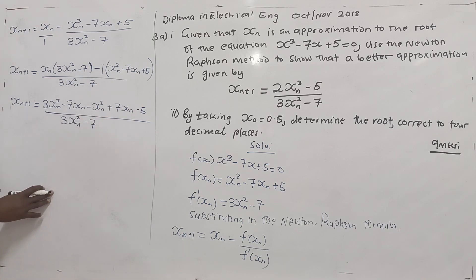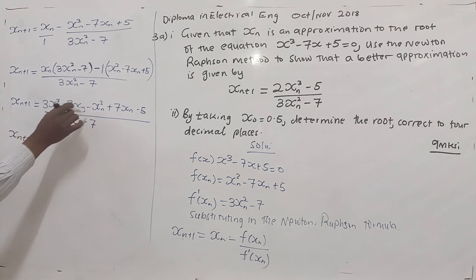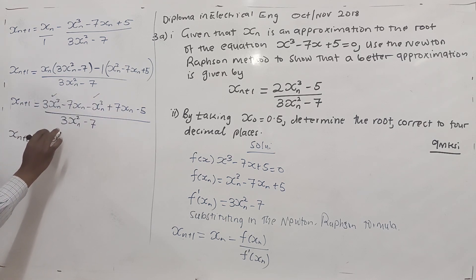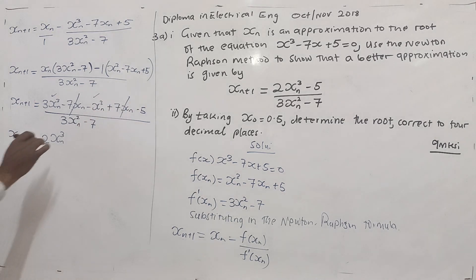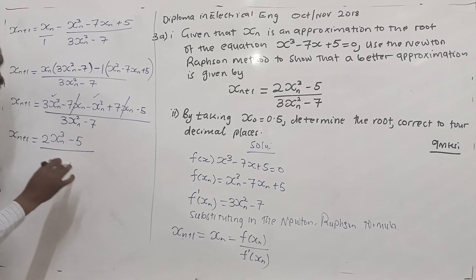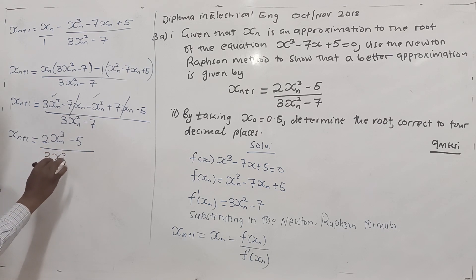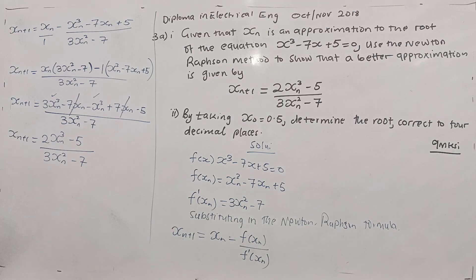So now we simplify. xn plus 1 is equal to — linking these two terms — we simplify to 2xn cubed. The 7xn terms cancel out, leaving minus 5, all over 3xn squared minus 7. This is similar to what we were expected to get — yes, it is similar. So we have already done part 1 of that question.